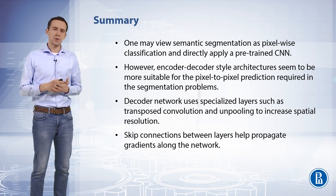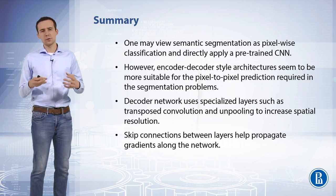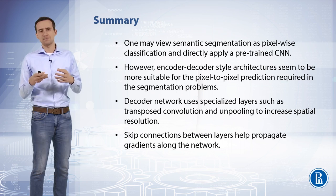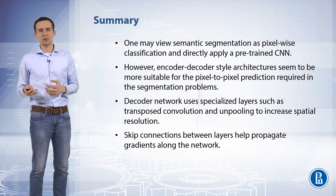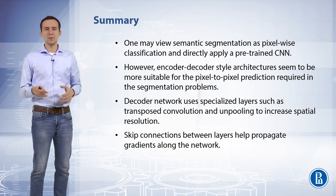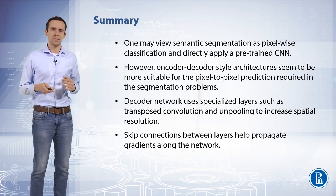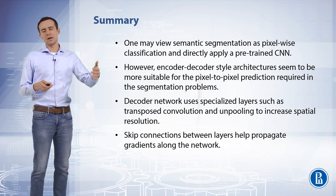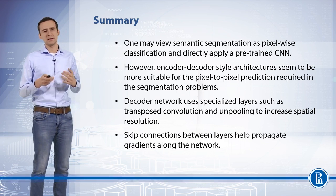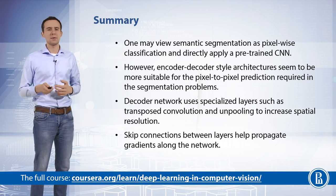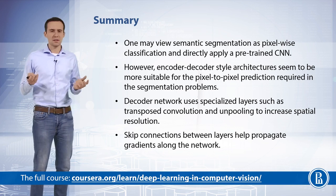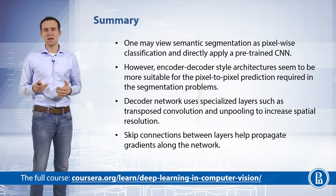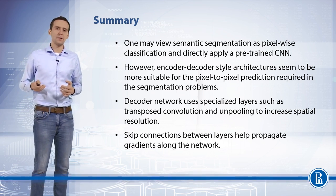The decoder network, which has to upsample the internal representation of the data, uses specialized layers such as transposed convolution and unpooling to increase the spatial resolution of the produced representation, ending up with a dimensionality the same as the input image. Also, what people use a lot are skip connections, which help propagate gradients back and forth along the network.